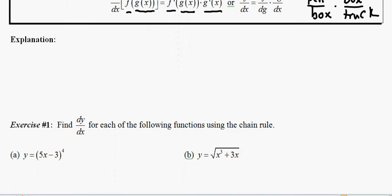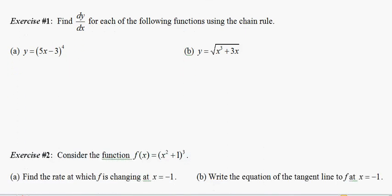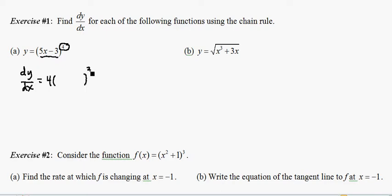We're going to go right into exercise one where we find dy/dx for each of the following functions using the chain rule. The key is to recognize that we have a composition where we have an inner function 5x minus 3 and an outer function, a quantity to the fourth. The chain rule tells us to find dy/dx by ignoring the inner function and asking what is the derivative of something to the fourth — that's four times something to the third. We leave that something alone, 5x minus 3, and multiply by the derivative of the inner function, which is just five because it's linear. We combine the four and the five to write our final answer as 20 times (5x minus 3) to the third.